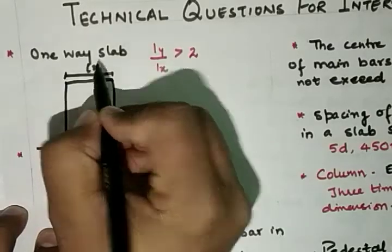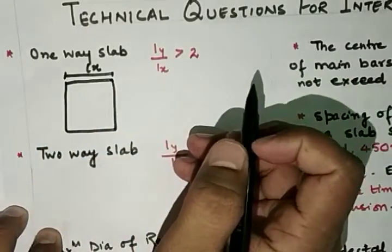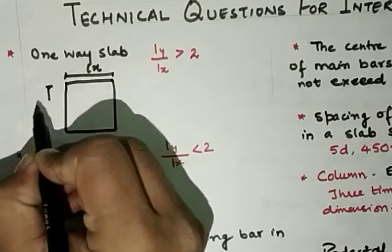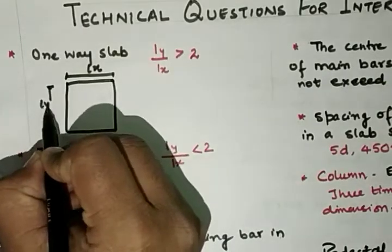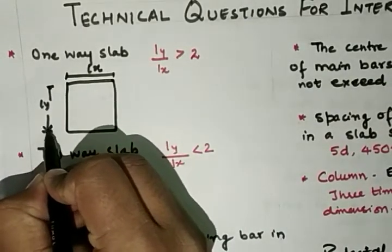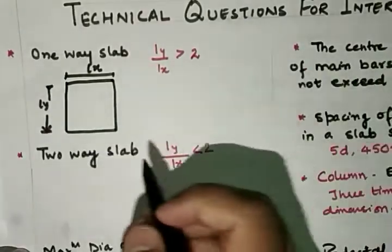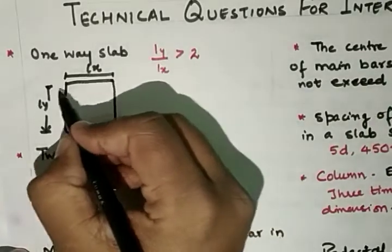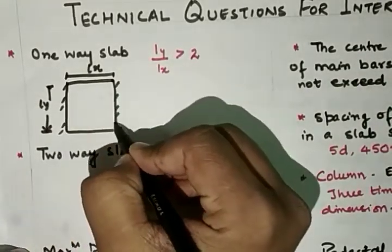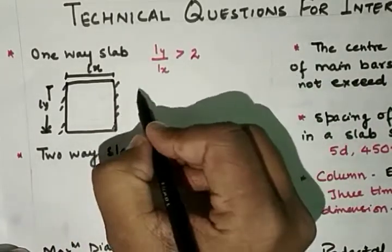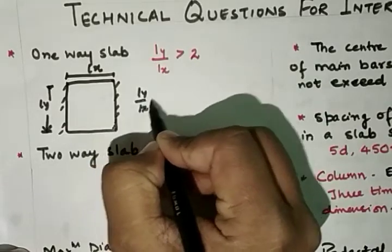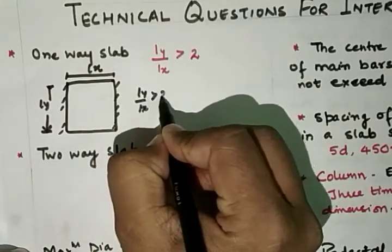To clarify the notation: Lx is the length of the shorter span and Ly is the length of the longer span. So the Ly upon Lx ratio is greater than 2 for a one-way slab.